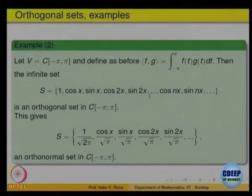The dot product of any two of them is 0 — meaning the integral of the product of any two distinct functions equals 0. For example, cos(nx)·sin(nx), or sin(nx)·sin(mx) when n ≠ m — the integral is equal to 0. So this is an orthogonal set, and we can make it orthonormal by dividing each function by its norm. Each integral of mod-square comes out equal to π. So this gives you an orthonormal set in C[0,1].